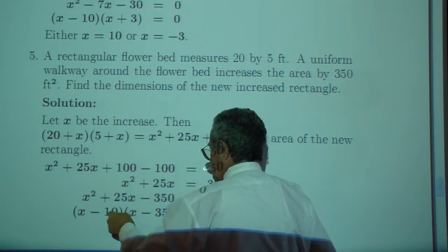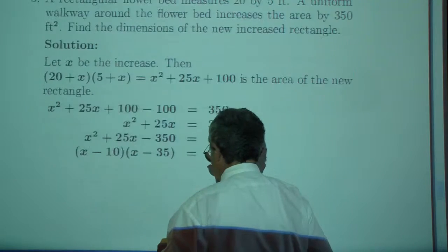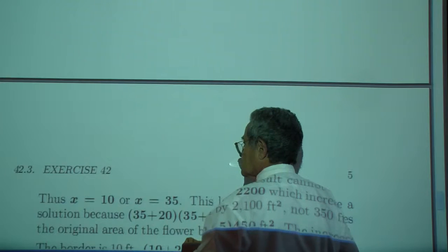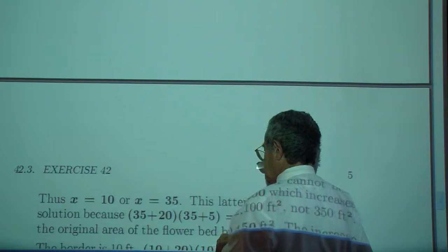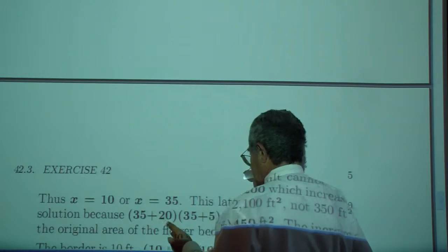Greatest common factor is one. Magic numbers 10 and 35. Solution. Either X is 10 or X is 35, but 35 is impossible because the largest dimension is 20.